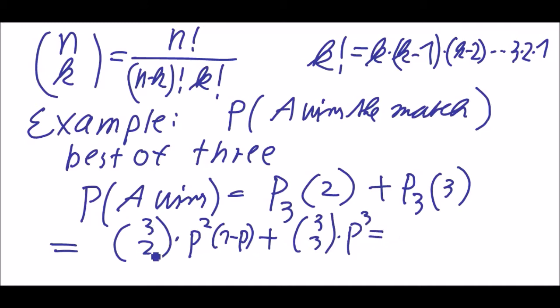What is three choose two? It's three times two divided by two, so it's three. Three times p squared times one minus p is three p squared minus three p cubed, plus p cubed.